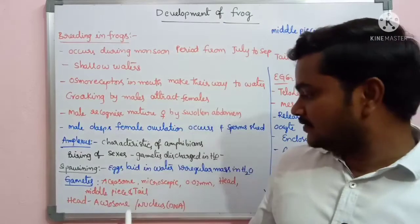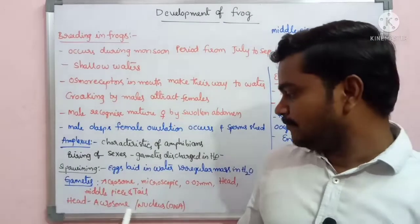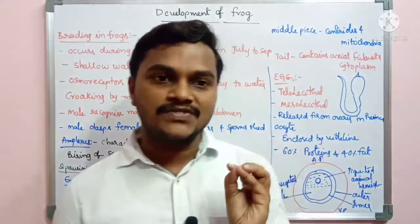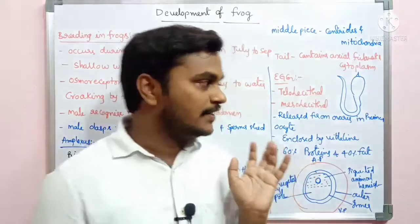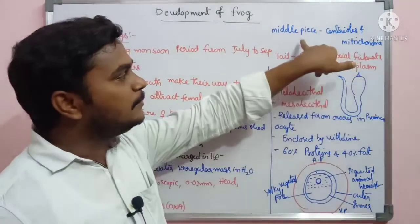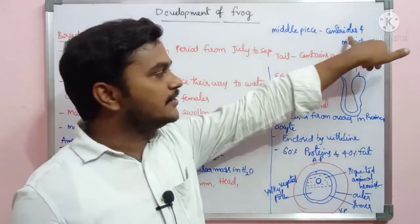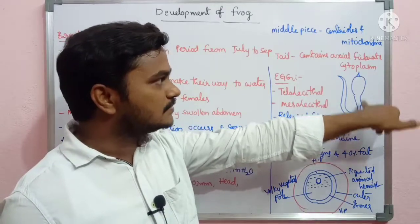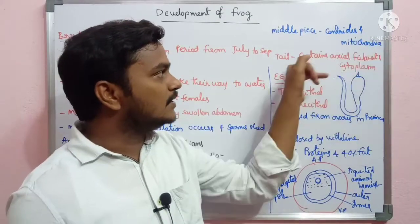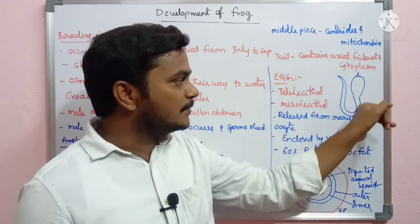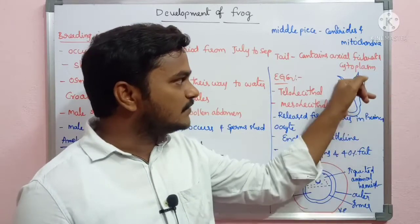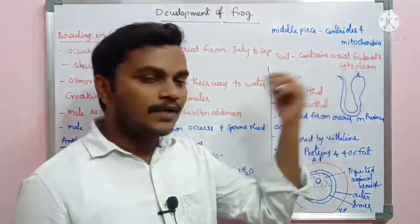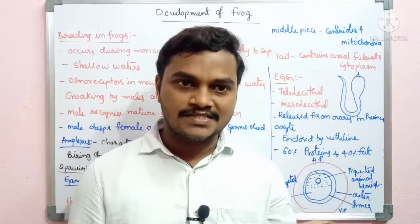The head region contains the nucleus, which contains DNA. The middle piece contains centrioles and mitochondria. The tail contains the axial filament. The cytoplasm is removed from the sperm.